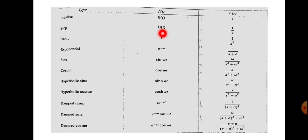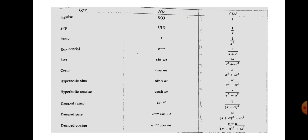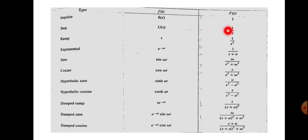Since u(t) equals 1 over [0, ∞), substituting gives the integral of e^(-st) dt from 0 to ∞, which yields 1/s. The ramp function t has Laplace transform 1/s². These are the basic standard signals with transforms: δ(t)→1, u(t)→1/s, t→1/s², and e^(-at)→1/(s+a).